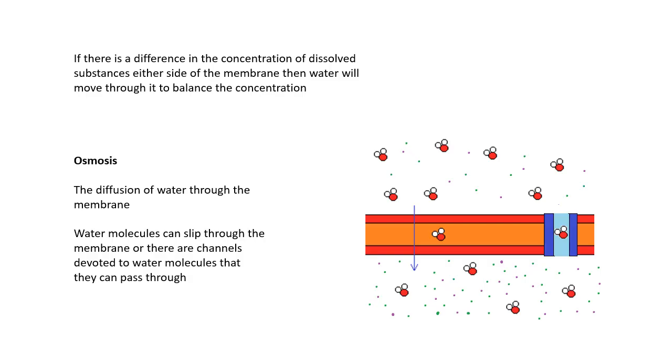Osmosis, and this is to do with the movement of water. If you like, it's the diffusion of water. If there's a difference in the concentration of stuff, either side of the membrane, if you look at this diagram. On one side of the membrane, there's lots and lots of salts dissolved in the water. On the other side of the membrane, there isn't as much. What will happen is that water molecules will diffuse through the membrane or through pores, these proteins called pores. And they will go to the side where it's more concentrated to balance out the concentration. Diffusion of water through the membrane is osmosis. Water molecules can slip through the membrane. Or there are special channels. I believe they're called aquapores that the water molecules can pass through.